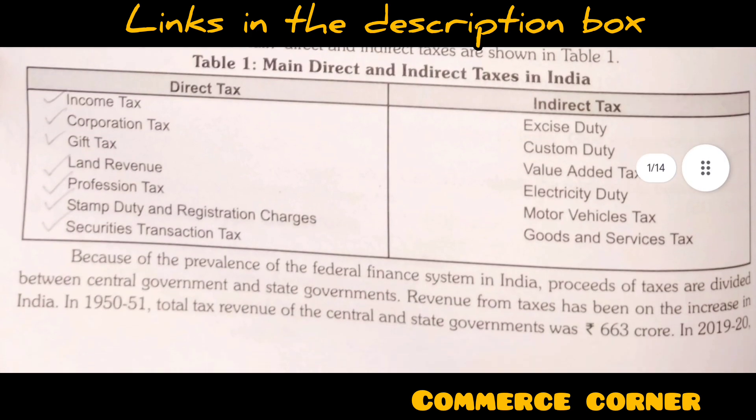For example, there is direct tax and indirect tax. You can add any three examples of direct tax like income tax, corporation tax, and gift tax. For indirect taxes, there are many examples — remember any three: excise duty, custom duty, and value added tax or GST can be written in short form.